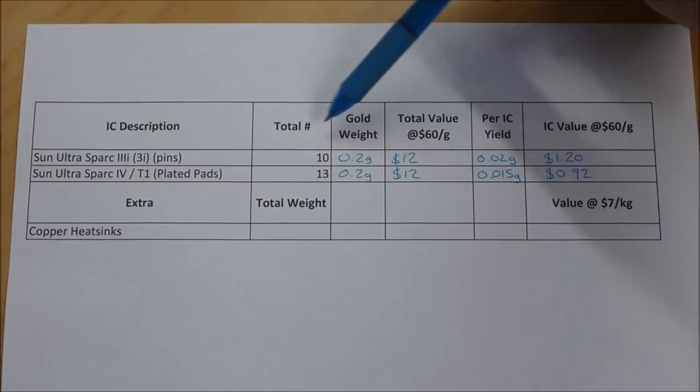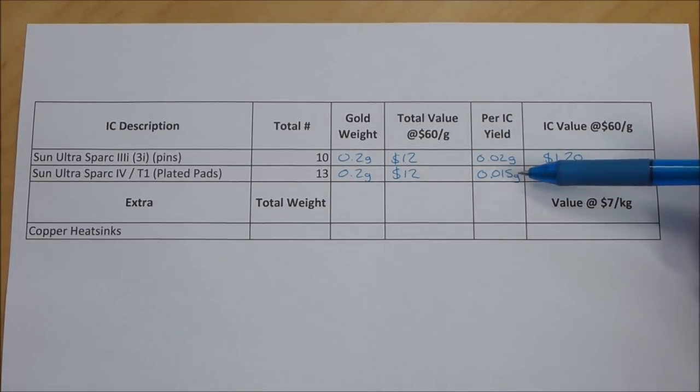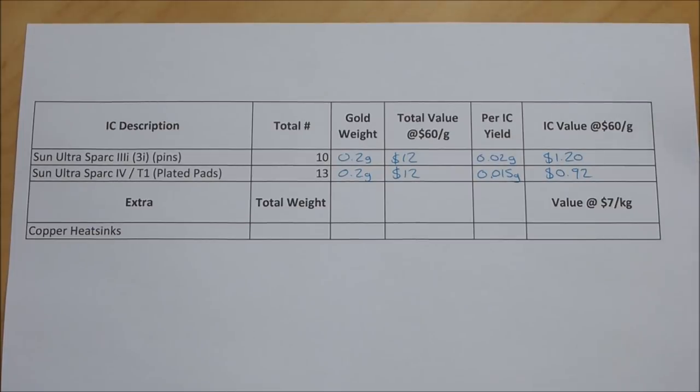The per IC yield, because we had 10 of the ones with the pins, gave us about 0.02 grams each and the ones with the plated bottoms gave us about 0.015 grams, so 15 milligrams there and 20 milligrams there. That means that the value at the end of the day is about $1.20 each for those ICs that have the pins, which is still a lot better than the Pentium 4 type chips. I think from memory they were about 30 cents each, so terrible but not that terrible.